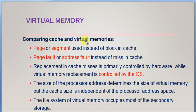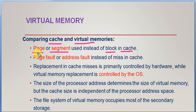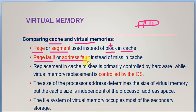Now here we have a comparison between cache and virtual memory. In virtual memory, page or segment is used instead of block as used in cache. So in virtual memory the division of memory is called a page or segment, whereas in cache it is called a block. Similarly, page fault or address fault is the name given to what is called a cache miss in cache memory.